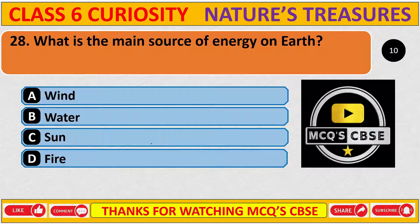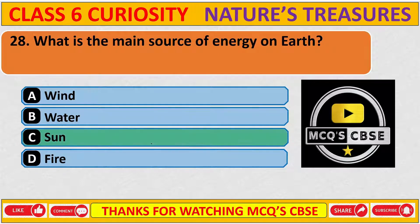What is the main source of energy on Earth? The correct answer is C: Sun.